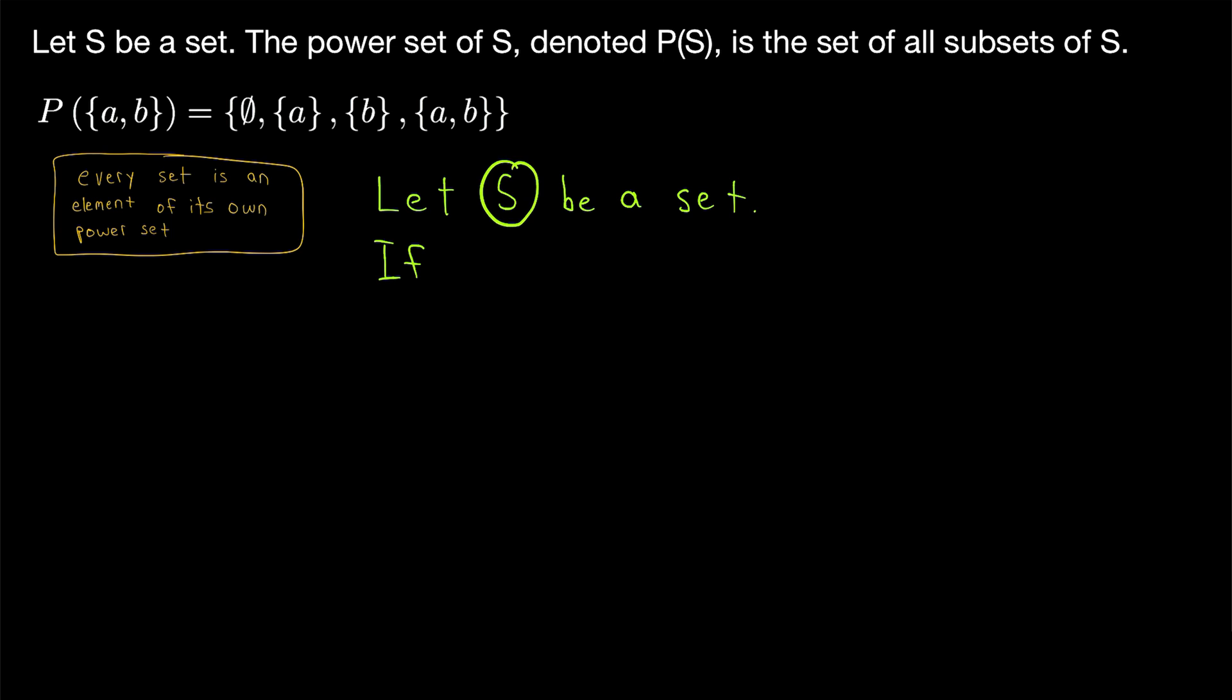Any element from S, so we might say if x is an element of S, just to represent an arbitrary element from S, if x is an element of S, what do we know about x? Well, we know that it's in S. Every element of S is an element of S. This, of course, is extremely obvious, and what it implies is that S is a subset of itself by definition. So every set is a subset of itself.